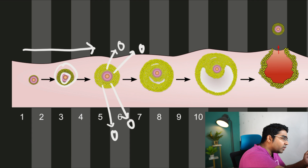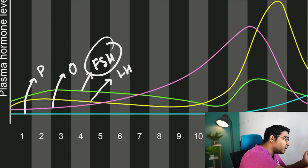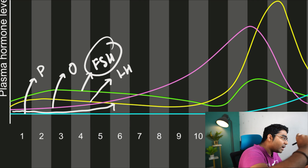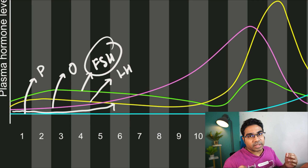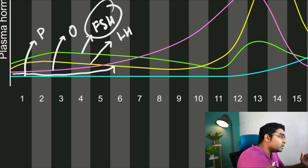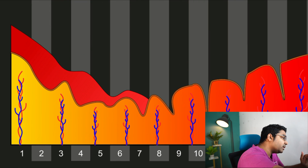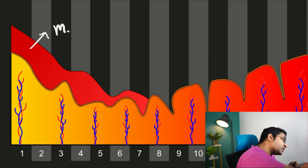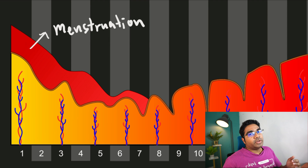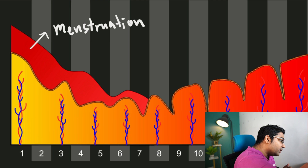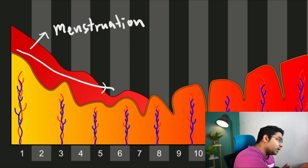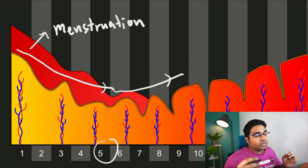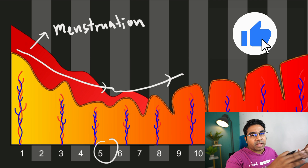We can see that the estrogen level, the pink line, starts to rise due to the development of the follicle cells. In the uterus during this time, menstruation has already begun and the lining has been shed. The release of estrogen then begins the repair of the lining, so around day five the endometrium starts to thicken back again due to the action of estrogen repairing the endometrial wall.